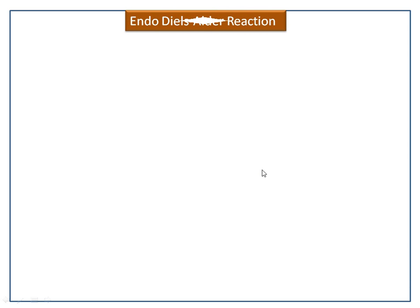Now we discuss the endo-Diels-Alder reaction. Dimerization of cyclopentadiene is a good example of the endo-Diels-Alder reaction. It undergoes a 4+2 Diels-Alder reaction and gives two types of product. At low temperature, it gives predominantly the endo-product.